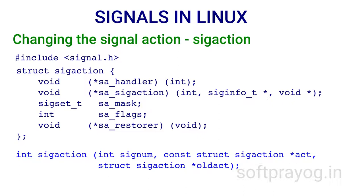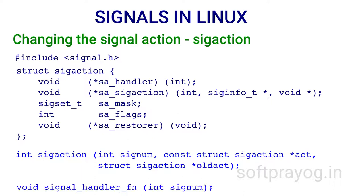Consider the case when we are using SA_Handler. If SA_Handler is SIG_DFL, it means the default action of the signal is to be restored. If SA_Handler is SIG_IGN, the signal is to be ignored. SA_Handler may also be a pointer to a signal handler function with prototype void signal_handler_fn(int signum), in which case signal_handler_fn is installed as the signal handler for that signal.